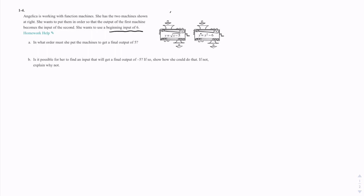Let's just try it. Let's put a 6 in here and see what comes out. Remember, what goes into the machine is the x value, the domain. So we would have y equals the square root of 6 minus 5. This comes out to y equals the square root of 1, and the square root of 1 is 1.